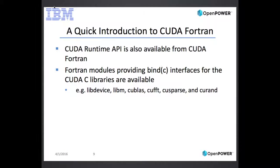CUDA-C provides a lot of libraries for BLAS, Fourier transforms, sparse algebra, and random number generation. CUDA Fortran provides Fortran modules with bind-C interfaces for all of these, and XL Fortran provides all of these as well.